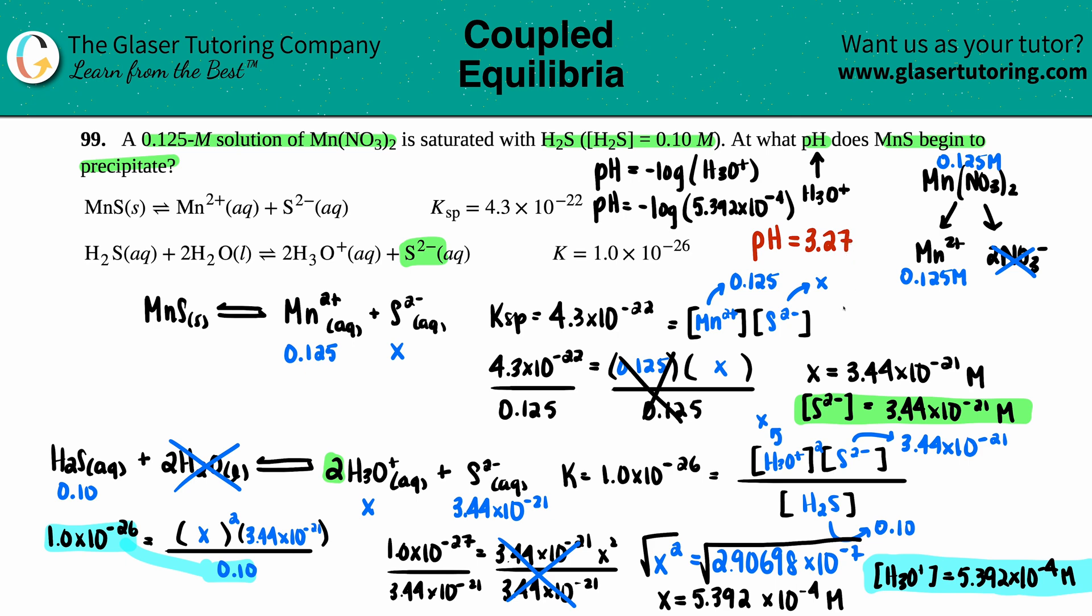And that looks good to me. 3.27. And that's it. There you go. So that is the pH in which MnS begins to precipitate. So pretty low pH. But yeah, that's it guys.